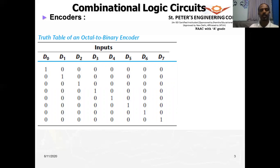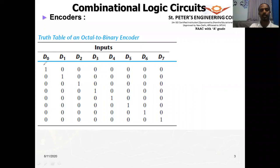Let us look at the octal to binary encoder — we take an octal number and convert it into binary. For those who don't know, binary uses only two digits: zero and one. Decimal uses digits zero to nine. Octal represents numbers using eight digits: zero to seven.